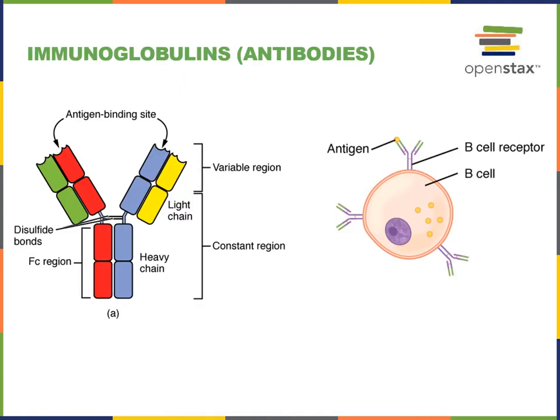Here we see the antibodies, also known as immunoglobulins, have a structure made from two heavy chain polypeptides and two light chain polypeptides. The FC region of the antibody is the constant region, whereas the light chain as well as a portion of each heavy chain forms the variable region of the antibody, and this variable region forms the antigen binding site.